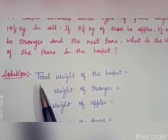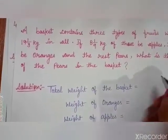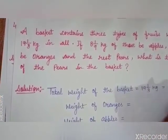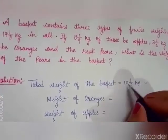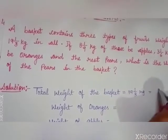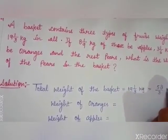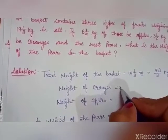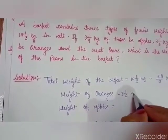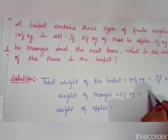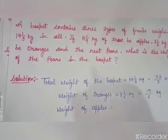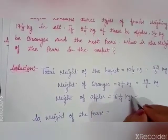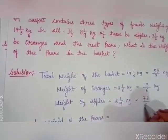Start solving it. First of all, we write what is given. Total weight of the basket is 19 whole 1 by 3 kg. Convert it into an improper fraction: 19 into 3 is 57, and 57 plus 1 is 58 by 3 kg. Weight of oranges is 3 whole 1 by 6 kg, that is 6 into 3 is 18, and 18 plus 1 is 19 by 6 kg.